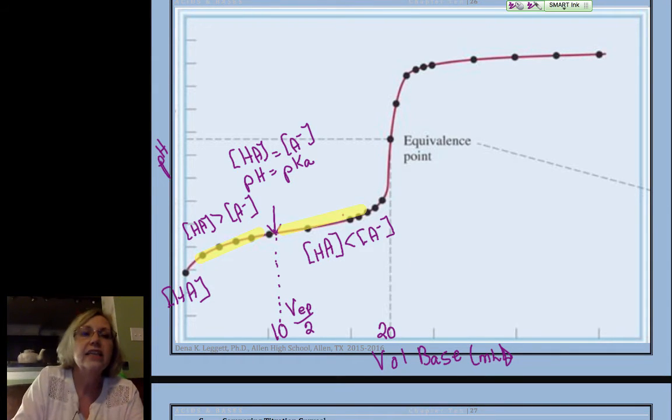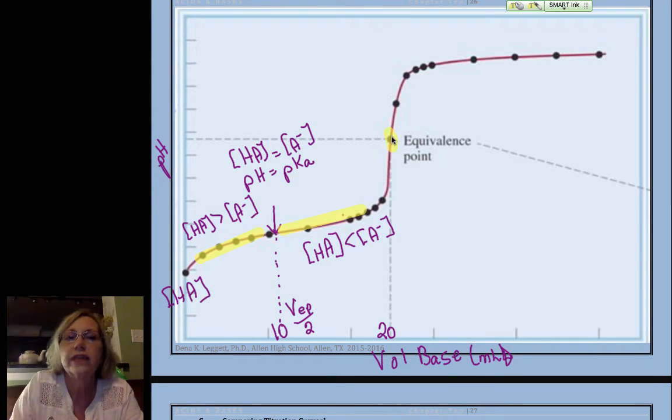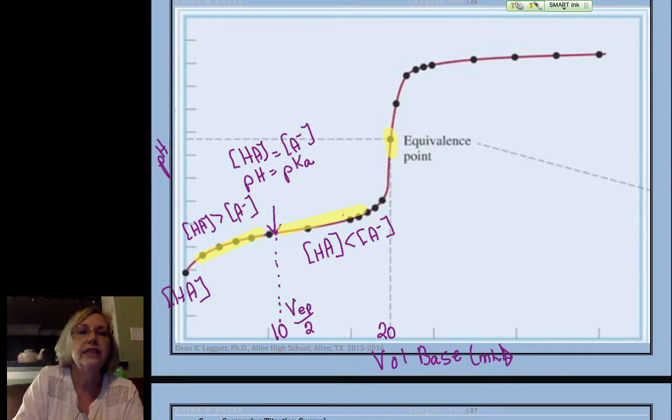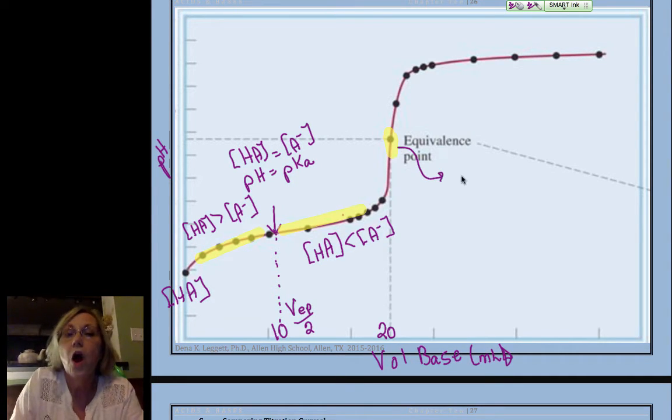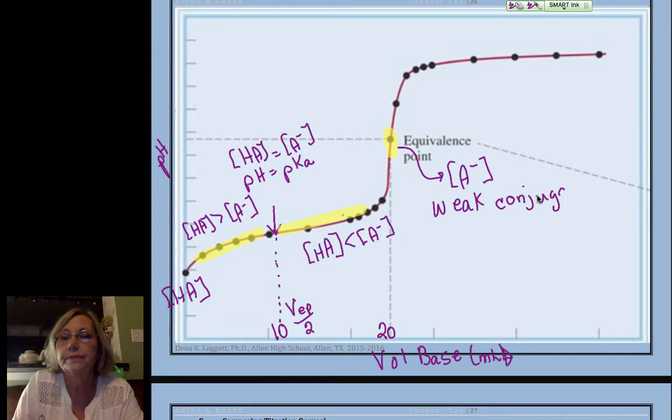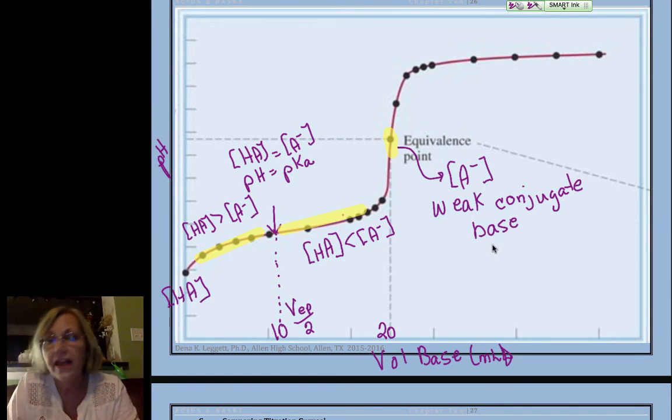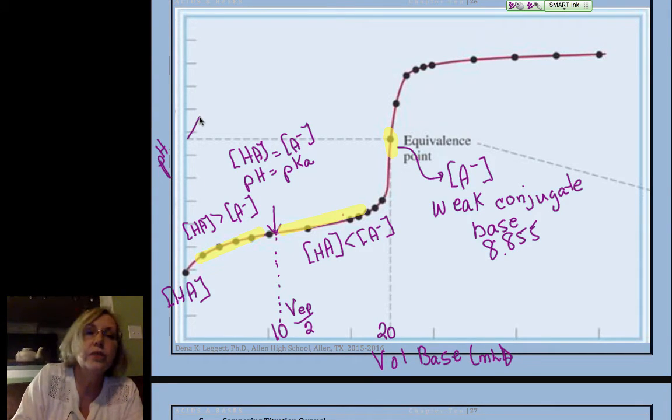Okay, now after that half equivalence point, we'll see, and we saw from the calculations, go back up and look at that data point, look at the one that was at 15 milliliters. And you see that now the deprotonated form dominates. Because at the equivalence point, right there at the equivalence point, all we have is our weak conjugate base.